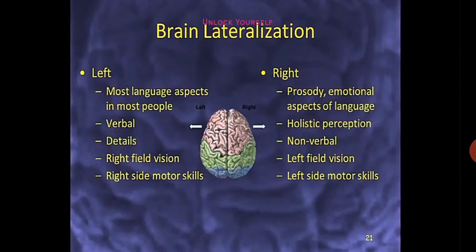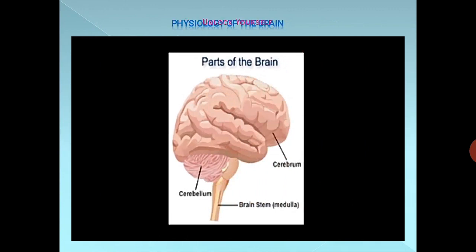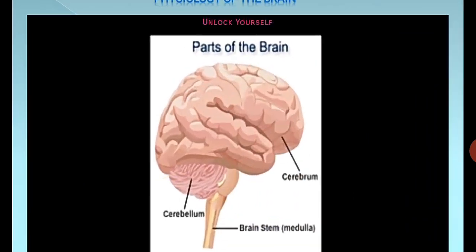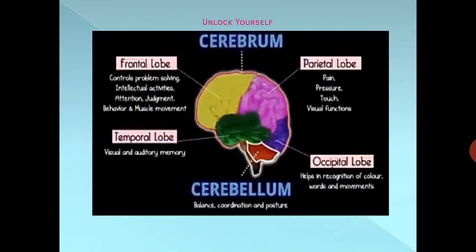The left field of vision is concerned with the right hemisphere. Now let us see the major parts of the brain — the physiology of the brain. The major parts are the cerebrum, cerebellum, and brain stem. The cerebrum is the largest part of the brain, and it is in the cerebrum that learning happens — it is the active, powerful part where higher-order learning takes place.